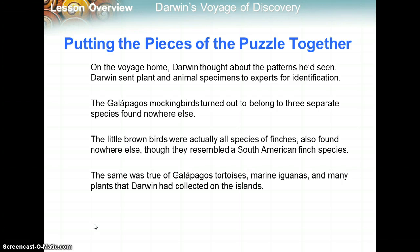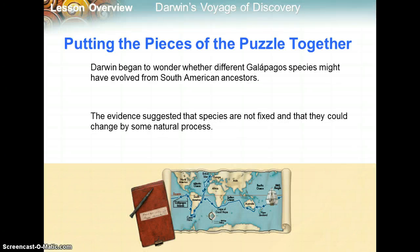On the voyage home, Darwin sent plant and animal specimens to experts for identification. The mockingbirds turned out to be three separate species found nowhere else. The little brown birds were actually all species of finches, also found nowhere else, though they resembled birds from South America. The same was true for the tortoises, marine iguanas, and many plants Darwin had collected on the islands. Putting these pieces together, the evidence suggested that species are not fixed and that they could change by some natural process.